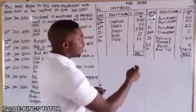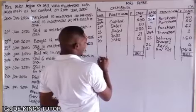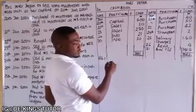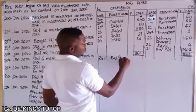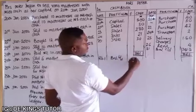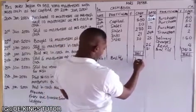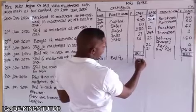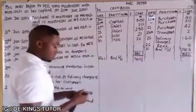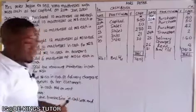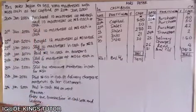The balance carried down of 741.50 naira is entered on the credit side dated 31st January. At the start of the new month, February 1st, it is brought down on the debit side as 'balance brought down' — 741.50 naira. That becomes the opening cash balance.